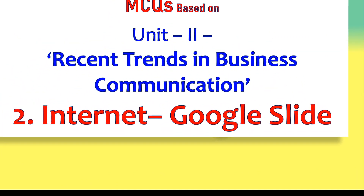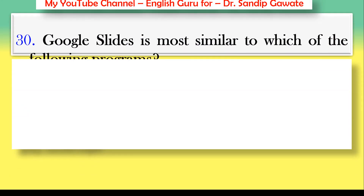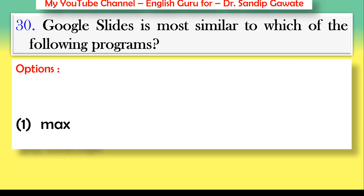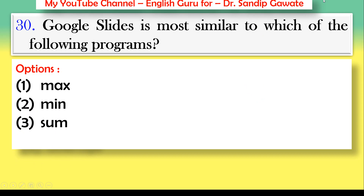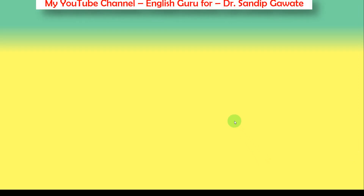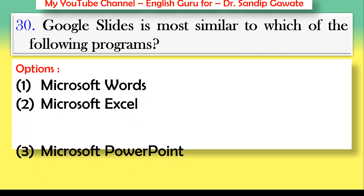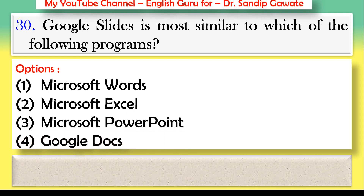The next MCQs are based on unit number two, recent trends in business communication — the fourth topic: Google Slides. Question 30: Google Slides is most similar to which of the following programs? Options: Microsoft Word, Microsoft Excel, Microsoft PowerPoint, or Google Docs. The correct answer is option number three — Microsoft PowerPoint.